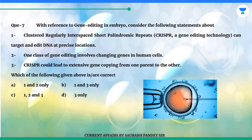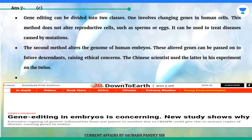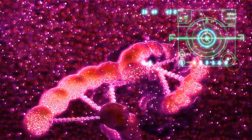Which of the following given above is correct? A. One and two only. B. One and three only. C. One, two and three. D. Three only. Answer is C. Gene editing can be divided into two classes. One involves changing genes in human cells; this method does not alter reproductive cells such as sperm or eggs, and can be used to treat diseases caused by mutations. The second method alters the genome of human embryos; these altered genes can be passed on to future descendants, raising ethical concerns. The Chinese scientist used the latter in his experiment on twins.